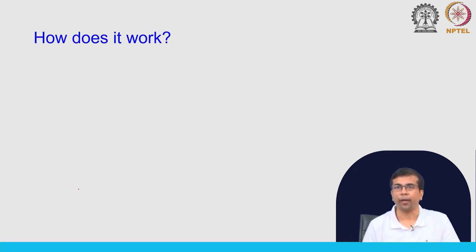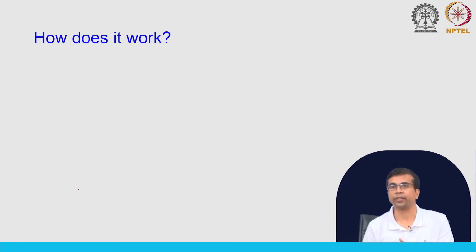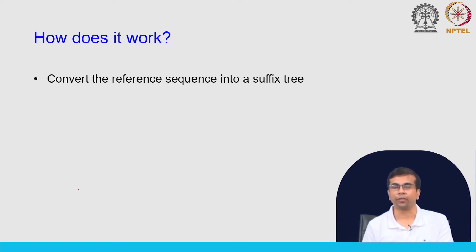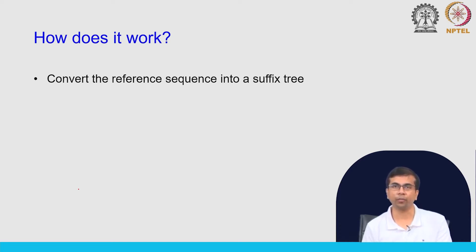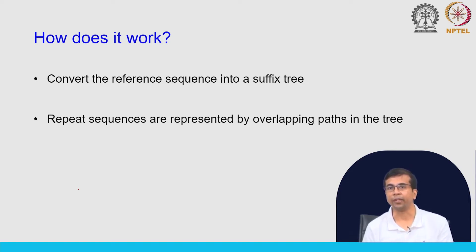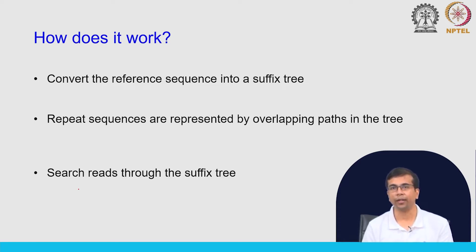How does this work? We will discuss this step by step and we will build suffix trees and then suffix arrays, and we will see how we can search very efficiently using these data structures. What we do is convert the reference sequence into a suffix tree. Repeat sequences are represented by overlapping paths in that tree, which means mapping reads to repeat sequences becomes very, very efficient. Then we search reads to the suffix tree.